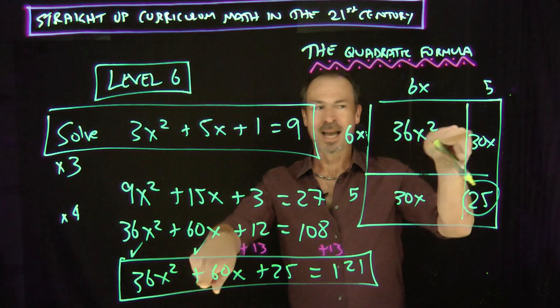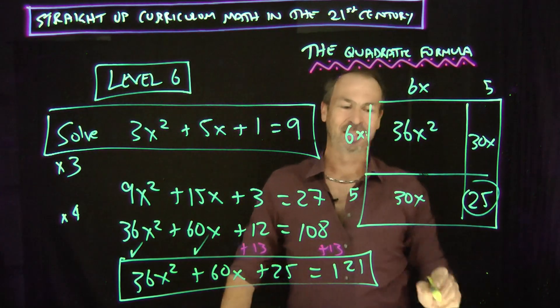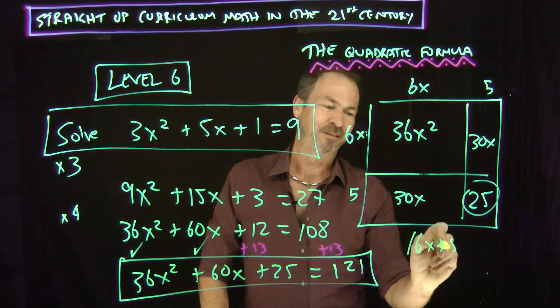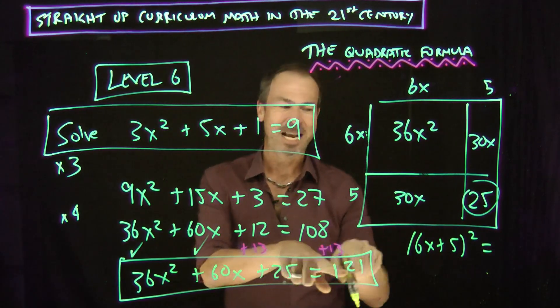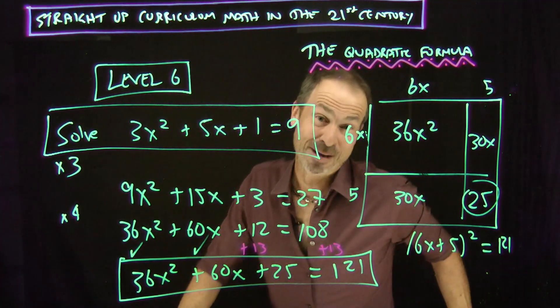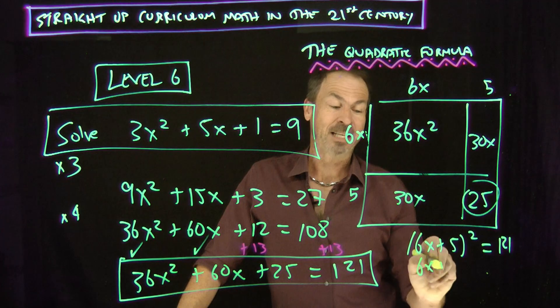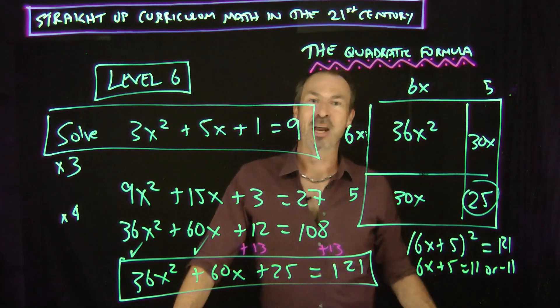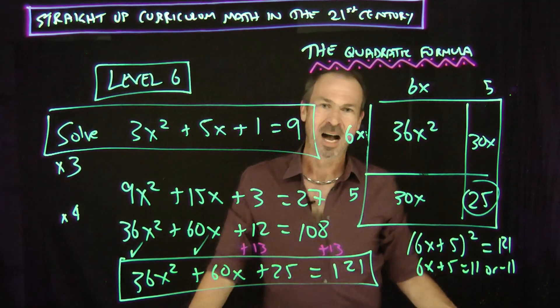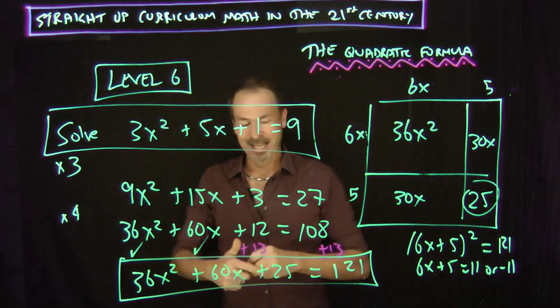36x squared, 60x plus 25 is really 6x plus 5 as a square. 6x plus 5 as a square apparently equals 121. Life is good. 121 happens to be a very nice whole number perfect square. 11 or negative 11. So 6x plus 5 is 11 or negative 11. And off we go. We can finish it all up. Subtract 5. Divide everything by 6. That's it.